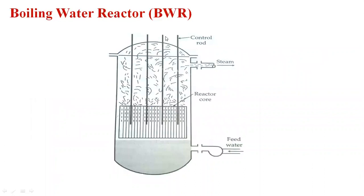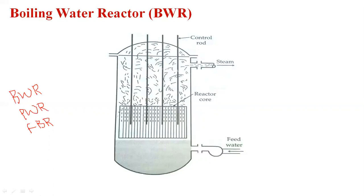Next, the nuclear reactor is classified into three types based on usage: the Boiling Water Reactor (BWR), the Pressurized Water Reactor (PWR), and the Fast Breeder Reactor (FBR). In nuclear power plants, they prefer the pressurized water reactor PWR. The first type to discuss is the Boiling Water Reactor.